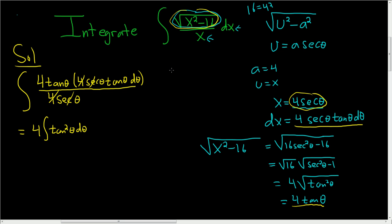Using the identity 1 plus tangent squared theta equals secant squared theta, we know that tangent squared is secant squared minus 1. So this is 4 times secant squared theta minus 1 d theta.